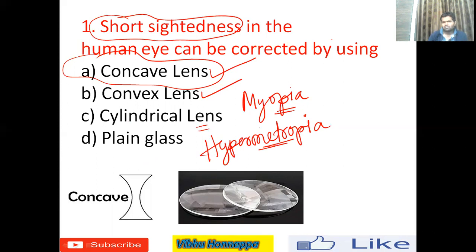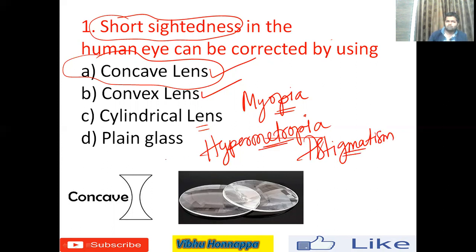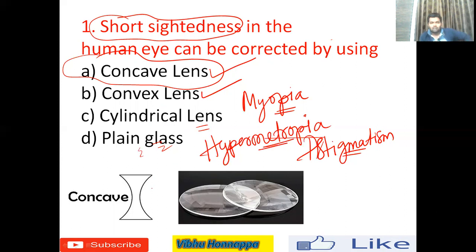Cylindrical lenses are used for another common eye defect called astigmatism, where the person loses the power of accommodation of the eye and light cannot converge or diverge properly. Astigmatism is corrected using cylindrical lenses. Plain glasses, the fourth option, are used for decorative purposes — for example, in water bottles or jars.